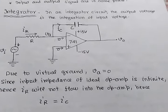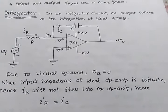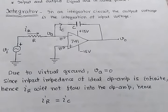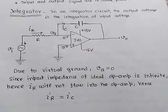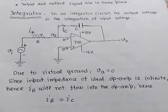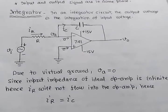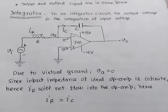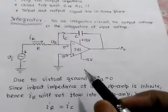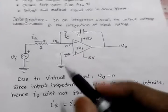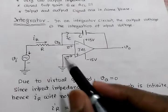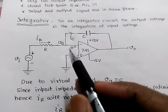In this video we will find the expression for output voltage of an integrator circuit. An integrator is a circuit whose output voltage is the integration of the input voltage. This is the circuit diagram of an integrator using an operational amplifier. In the integrator we use a capacitive feedback.